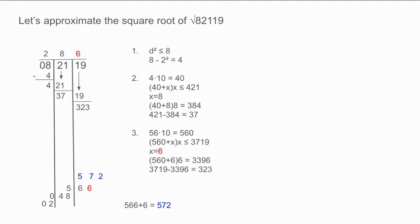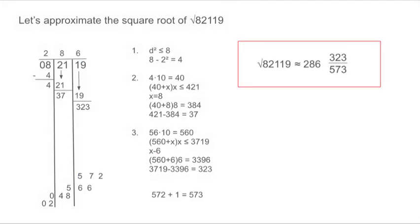Add 566 plus 6 which is equal to 572, and write 572 in the bottom column shifted one spot over. Now add 1 to 572 obtaining 573. Our answer to the approximate square root of 82,119 is approximately 286 and 323 over 573.